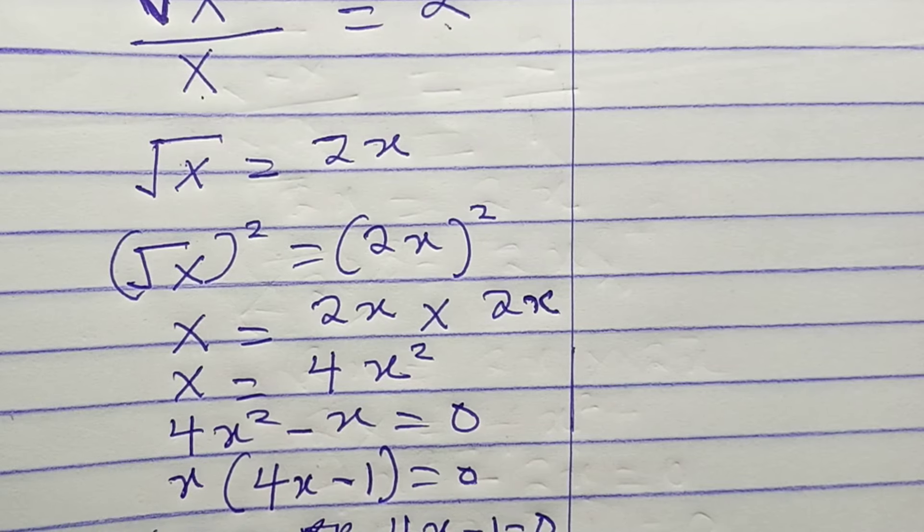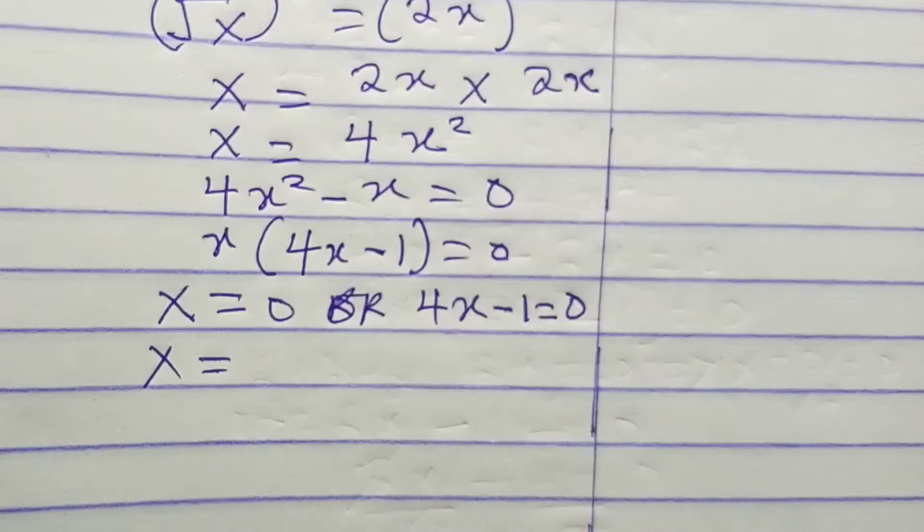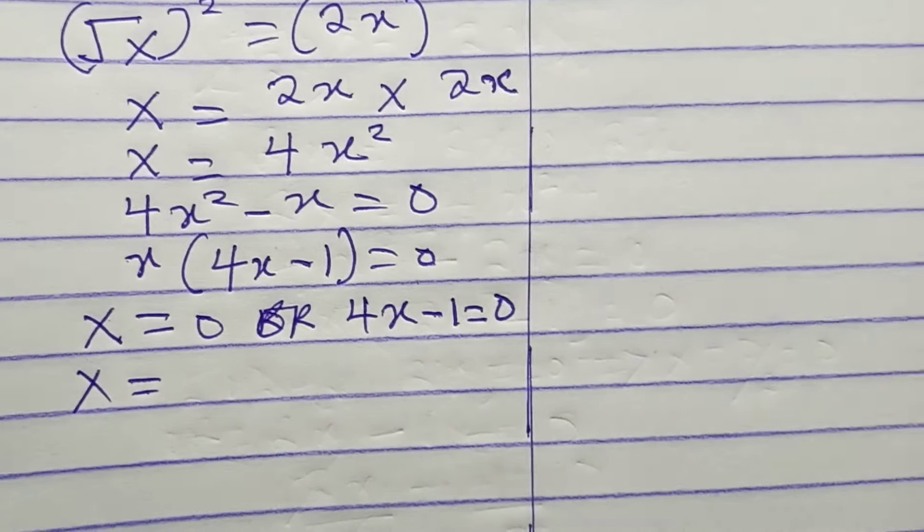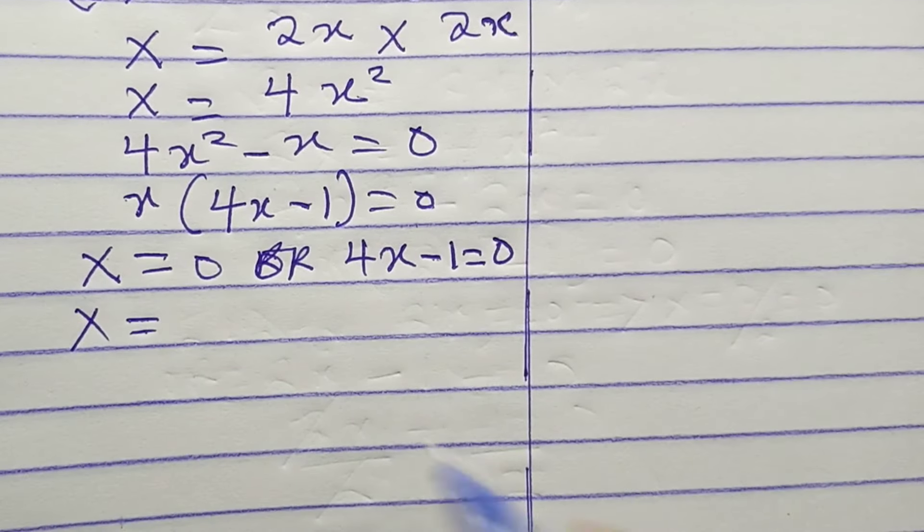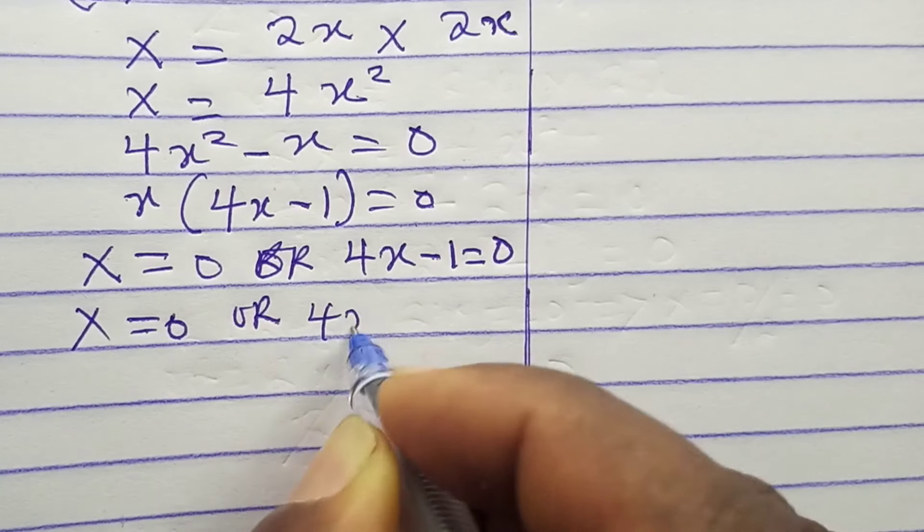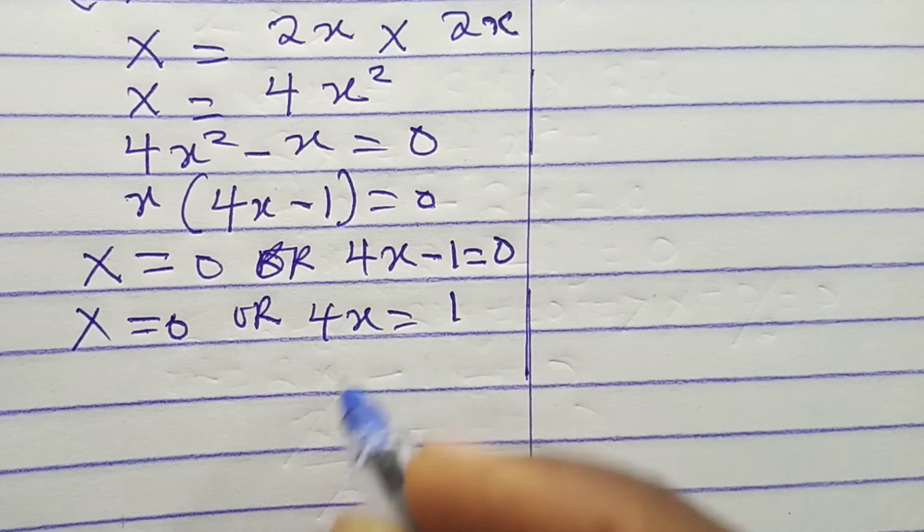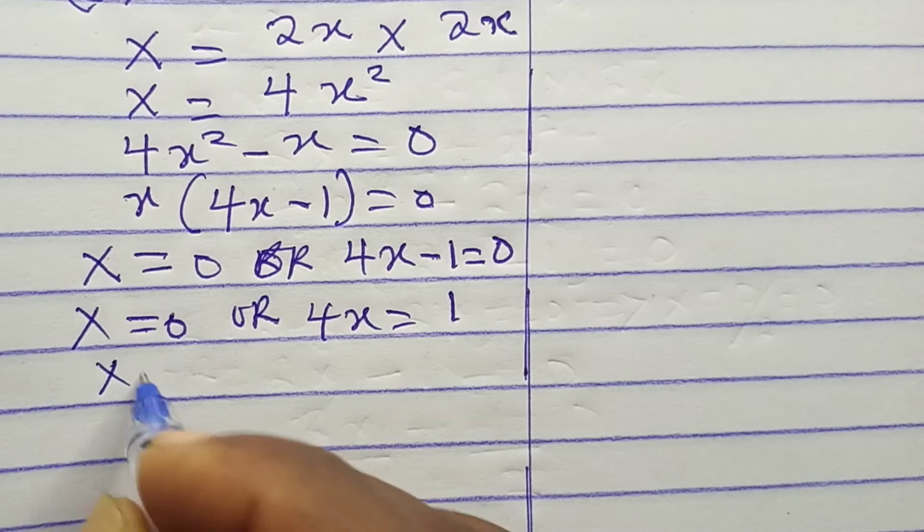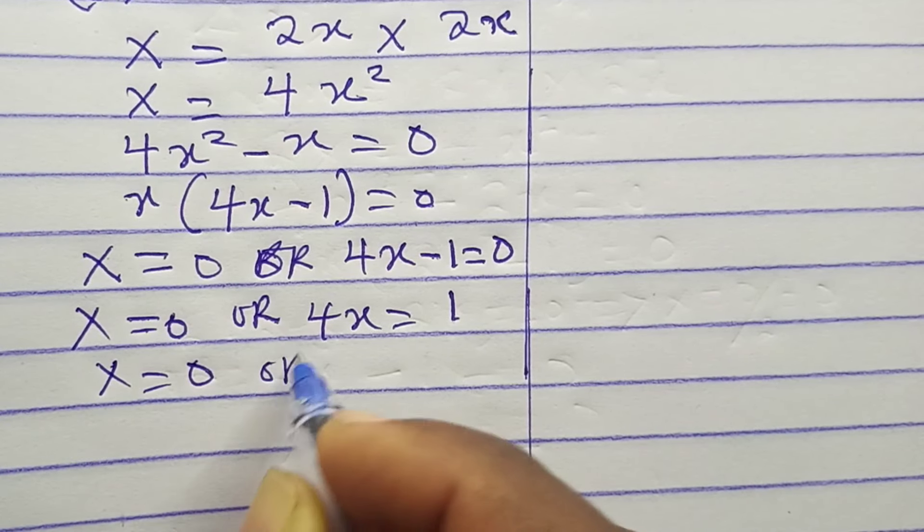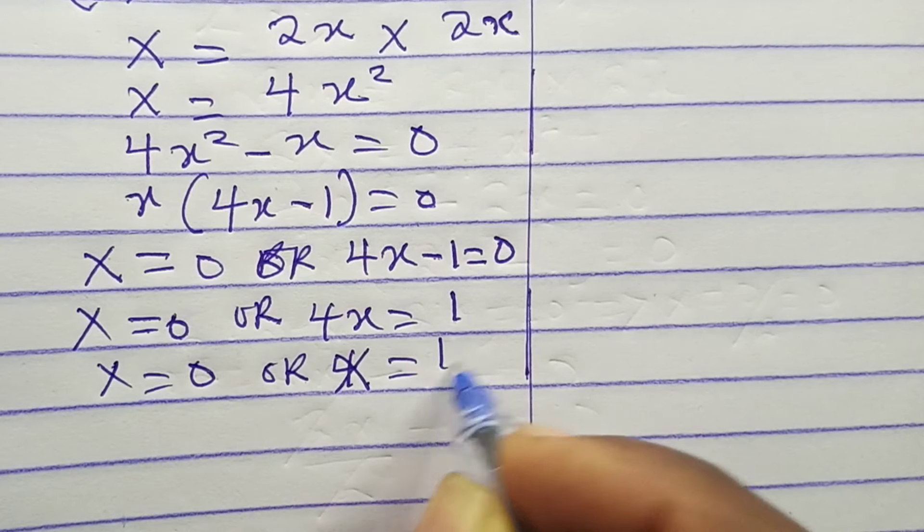So x equals zero or 4x equals 1, which means x equals zero or x equals 1 over 4.